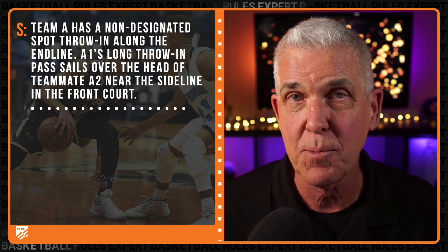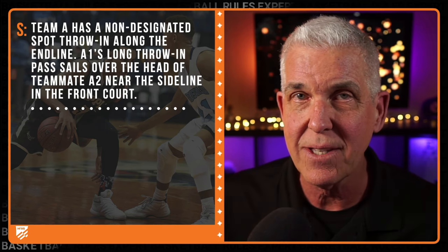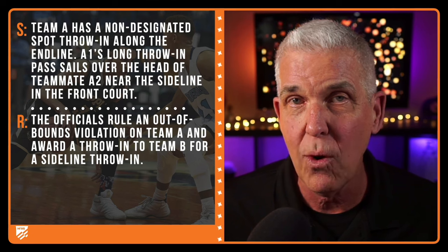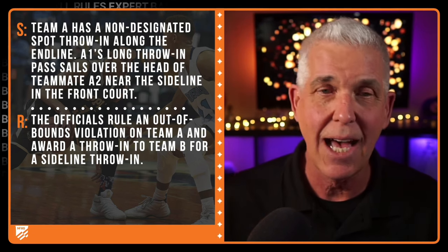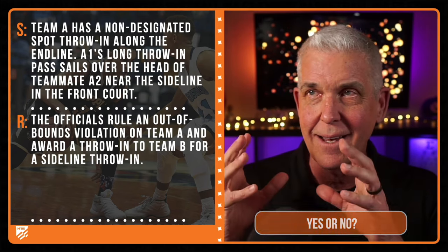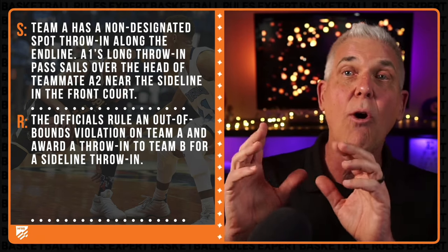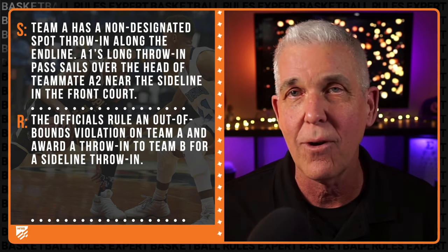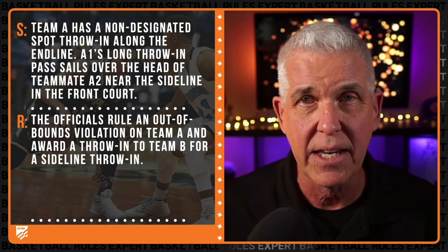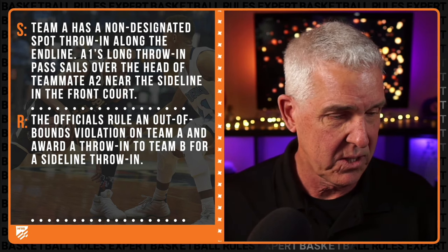Team A has a non-designated spot throw-in along the end line. A1's long throw-in pass sails over the head of teammate A2 near the sideline in the front court. The officials rule an out-of-bounds violation on Team A and award a throw-in to Team B for a sideline throw-in. Were the officials correct? Yes or no? The thrower sees a teammate down court, throws a long pass that sails over their head and contacts the floor near the sideline in the front court. The officials rule this to be an out-of-bounds violation. Were the officials correct?